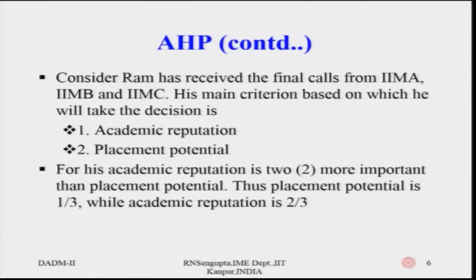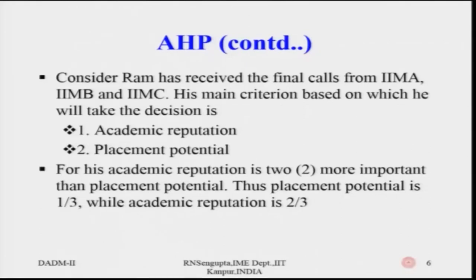Consider a simple example: Ram has received final calls from three institutes — IIM Ahmedabad, IIM Bangalore, and IIM Calcutta, labeled A, B, and C. Ram's main decision criteria are two: academic reputation and placement potential. Academic reputation covers how good the teachers are, the rigor of the course, availability of courses in finance, marketing, and operations research, frequency of exams, industry feedback on academic rigor, and how frequently students go abroad for higher studies.